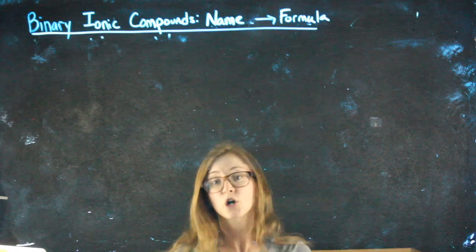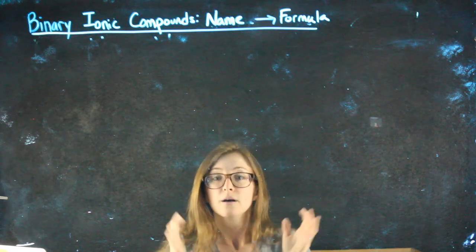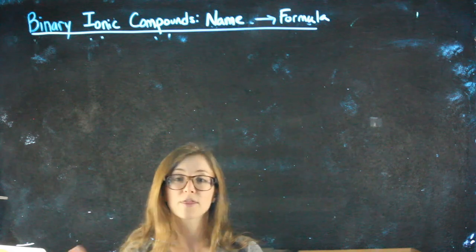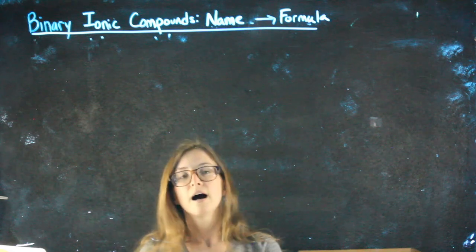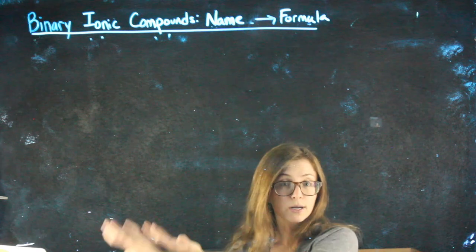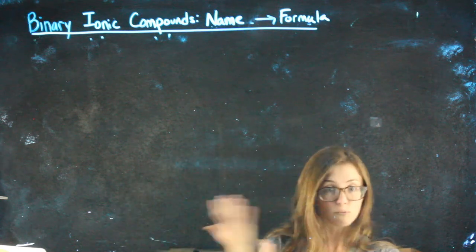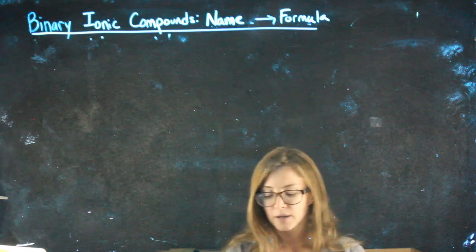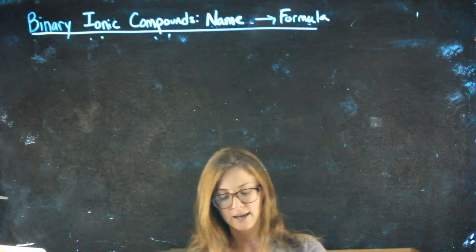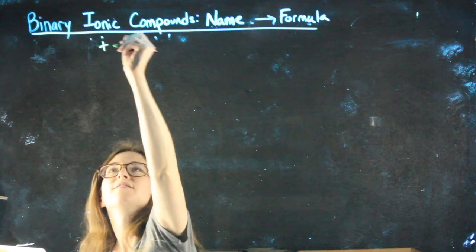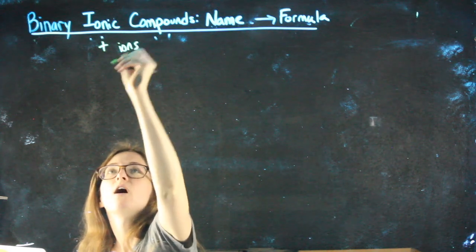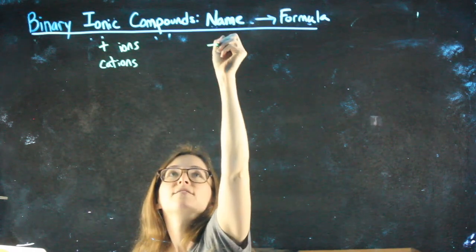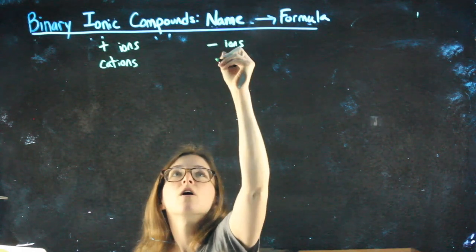It started neutral, everything's starting neutral on the periodic table, but if you're going to get rid of an electron, getting rid of negative, you end up with a positive ion. Something that accepts those electrons is now getting more negativity, more negative, so it's going to have a negative charge and be a negative ion. There are names for them in case you hear them anywhere. Positively charged ions are called cations. Negatively charged ions are called anions.